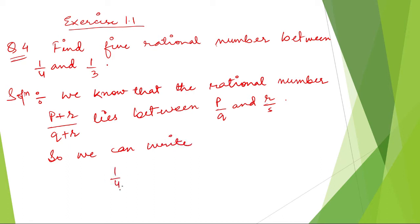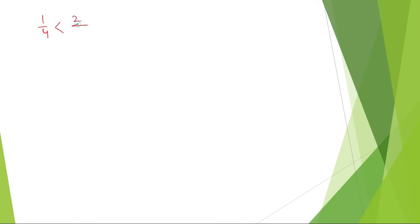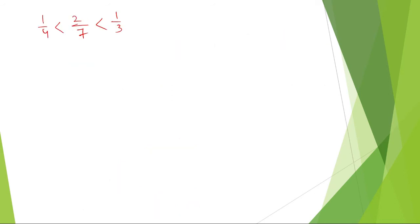We can write 1 by 4 is less than 1 by 3. So here it will be 1 plus 1 divided by 4 plus 3. Similar to the previous one, we are going to use only this method. The answer can be any number — provided the mathematics is correct, the answer will be correct. So we can write: 1 by 4 is less than 2 by 7, less than 1 by 3. How did we get 2 by 7? 1 plus 1 is 2, and 4 plus 3 is 7.